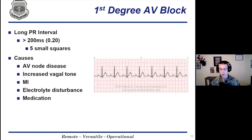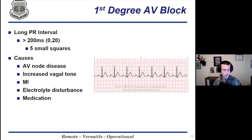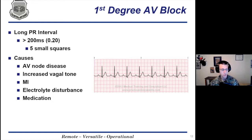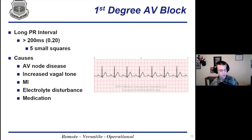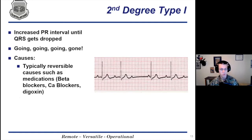Here we're going to go over heart blocks. First-degree heart block is a long PR interval greater than 0.20 seconds — greater than five small squares or one big box on your EKG. Causes include AV node disease, increased vagal tone, MI, electrolyte disturbance, and medication. Some medications that can cause this include beta blockers, tricyclic antidepressants, and things like hyperkalemia or other electrolyte disturbances.